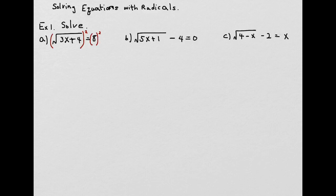So long as you have only the square root on one side, you can square both sides of the equation to get rid of the square roots. Once we do that, we have 3x plus 4 on the left side, and 8 squared, which is 64, on the right side. Now we have a linear equation.